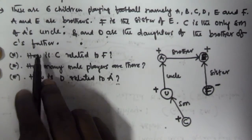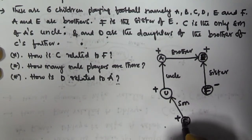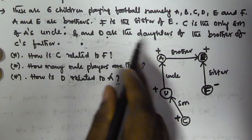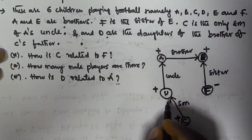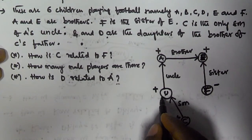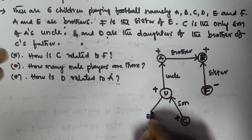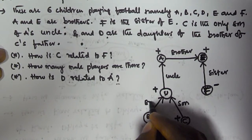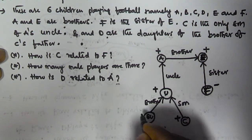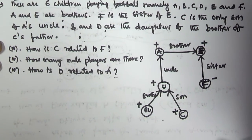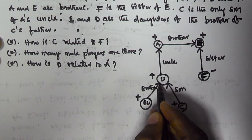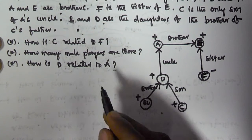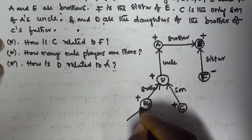B and D are the daughters of the brother of C's father. C's father is U, so we need to define U's brother — let's call him BU. BU is male, and B and D are the daughters of BU, so both B and D are female.